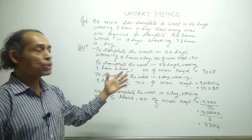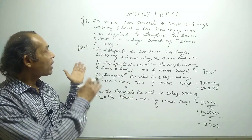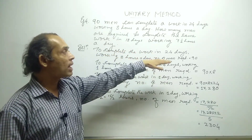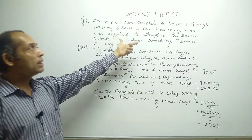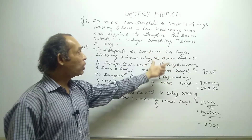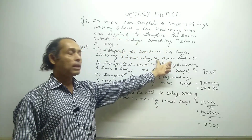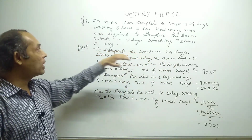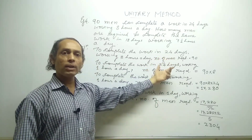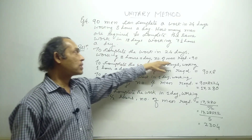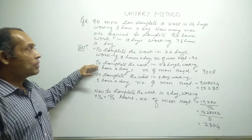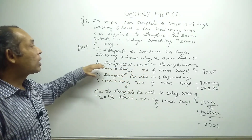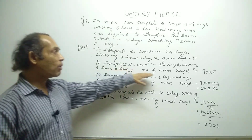When using the unitary method, whatever is asked in the question must be placed at the end of the statement — never in between. So we write: to complete the work in 24 days working 8 hours a day, the number of men required is 90. We place 'number of men required' at the end because that is what the final answer asks for.